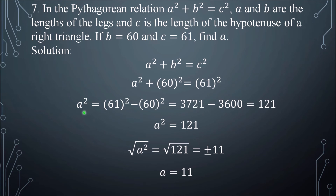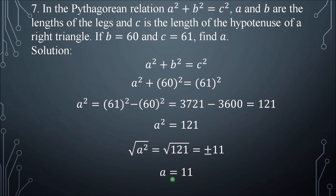Isolate a²: a² = 61² − 60². 61² is 3721 and 60² is 3600. Subtracting gives 121. So a² = 121. Get the square root of both sides. √(a²) = a, and √121 = ±11. But since we are talking about length, we only consider the positive root because there is no negative length. Therefore, a = 11.